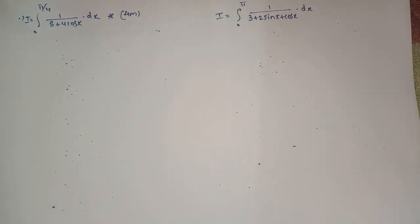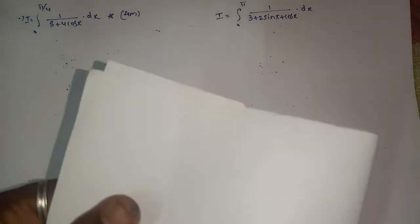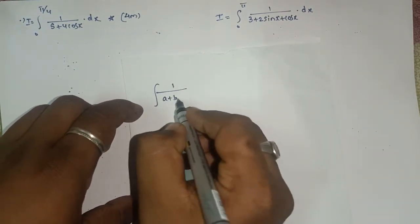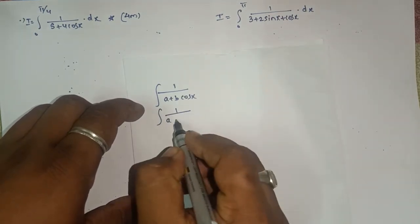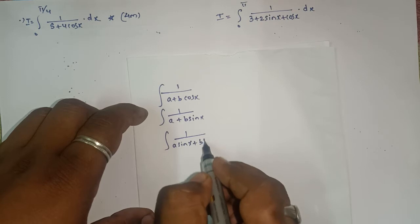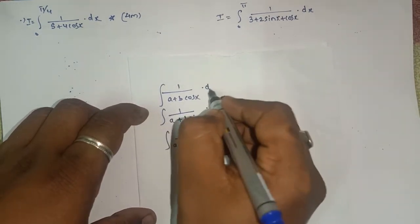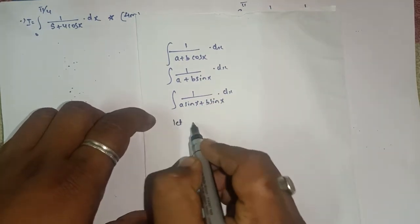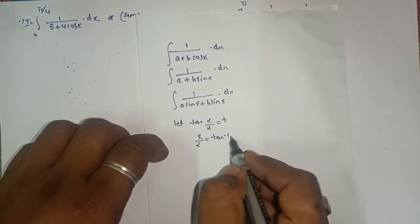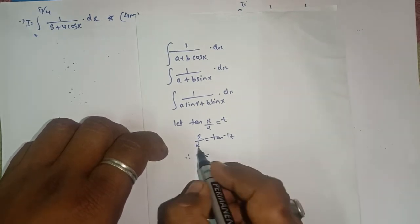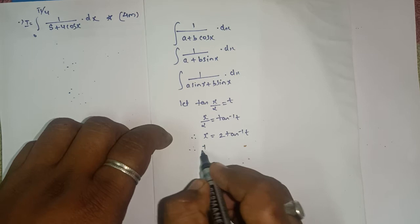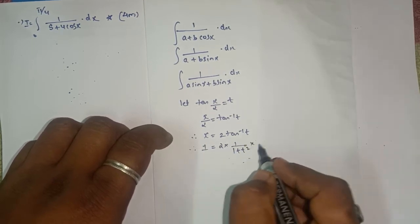This looks like the form 1/(a + b·cosx), or 1/(a + b·sinx), or a·sinx + b·cosx together. So what we use is the substitution: let tan(x/2) = t. Then x/2 = tan⁻¹(t), so x = 2·tan⁻¹(t). Differentiating: dx/dt gives 1 = 2 · 1/(1+t²) · dt/dx, so dx = 2/(1+t²) · dt.